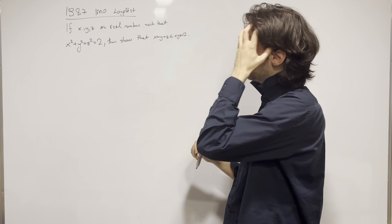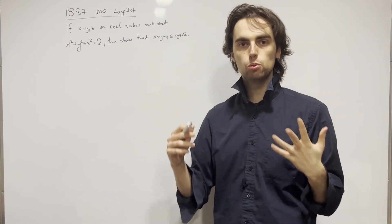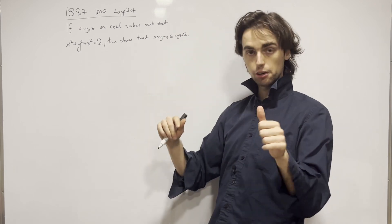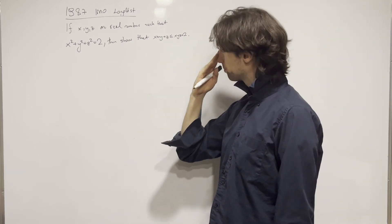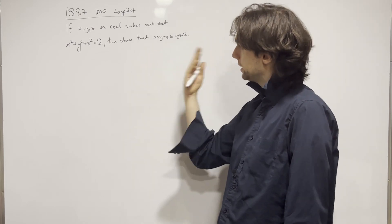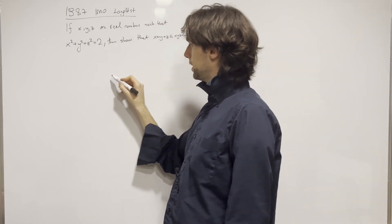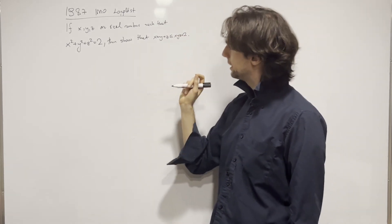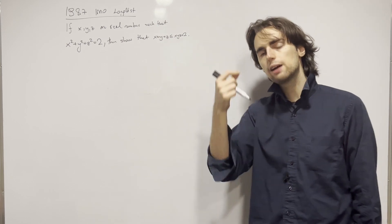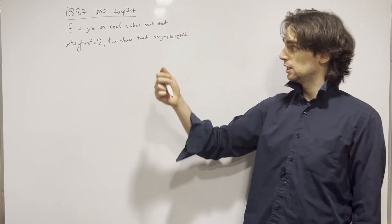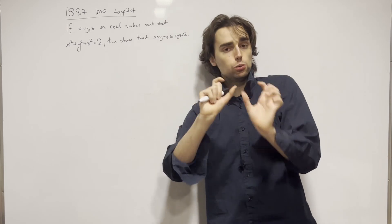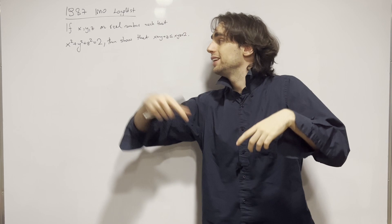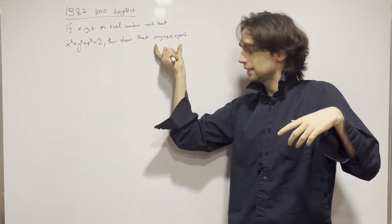So first, these are real numbers. What estimates can we do with them being real numbers? We can order them. This is symmetric — that's very important for us. Before estimating anything, we should also take into consideration when we have equality here, because the inequalities we use, we want to make sure that equality in those inequalities corresponds to equality in our target inequality.